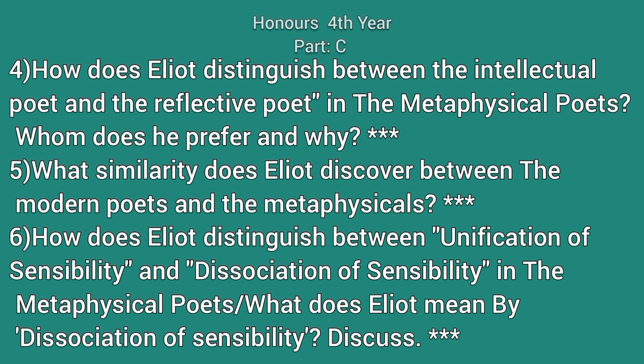4. How does Eliot distinguish between the intellectual poet and the reflective poet in the metaphysical poets? Whom does he prefer and why? 5. What similarity does Eliot discover between the modern poets and the metaphysicals? 6. How does Eliot distinguish between unification of sensibility and dissociation of sensibility in the metaphysical poets? What does Eliot mean by dissociation of sensibility?